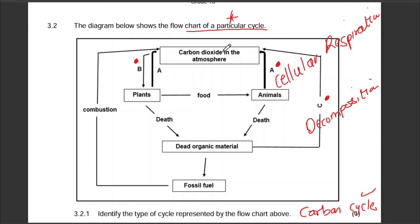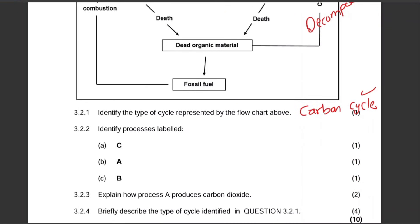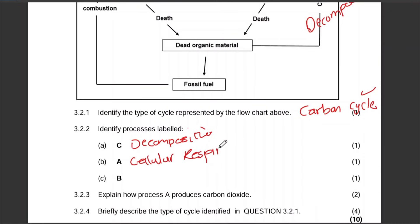For B: looking at the arrow, carbon dioxide in the atmosphere is going to be used up by plants — that process is photosynthesis. So in summary: C is decomposition, A is cellular respiration, and B is photosynthesis — one mark each.